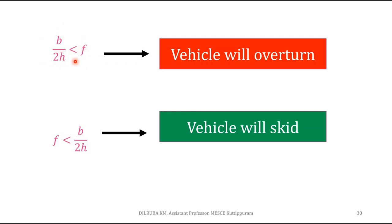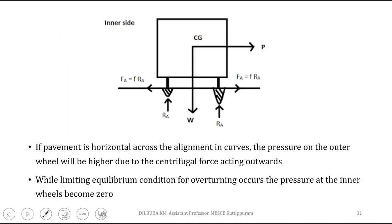Whether overturning or skidding occurs first depends on the values of b/2h and coefficient of friction. If b/2h is less than the coefficient of friction, overturning will occur first. If the coefficient of friction is less than b/2h, skidding will occur first. Both cases occur only when P/W exceeds both values.